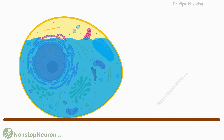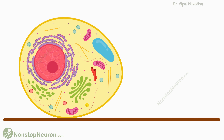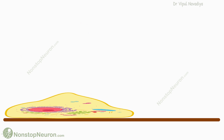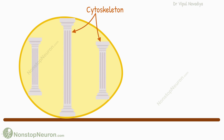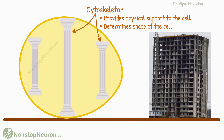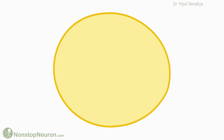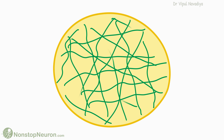We know that the inside of the cell is mostly water, and also the wall of the cell — the cell membrane — is fluidic in nature. Then why does the cell not collapse? The answer is the cytoskeleton. The main function of the cytoskeleton is to provide physical support to the cell and determine its shape. It is just like how the framework of beams and columns supports an entire building. The cytoskeleton is basically a network of fibrillar proteins seen throughout the cytoplasm.